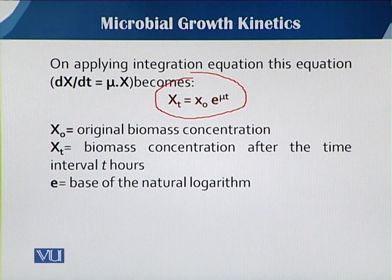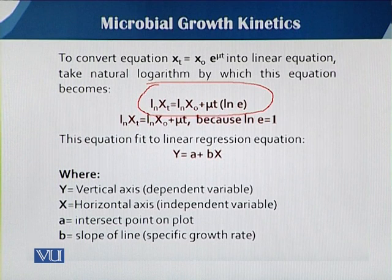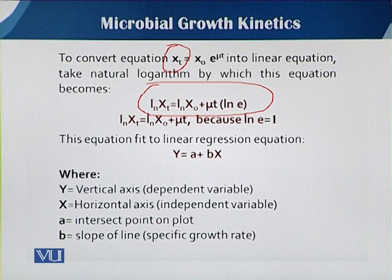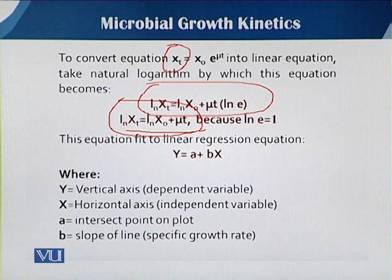This equation can be further transformed by taking the natural log. By logarithmic principles, multiplication becomes addition, division becomes subtraction, and exponents become multipliers. Since the natural log of e equals 1, the equation becomes: ln(X_t) = ln(X₀) + μt.